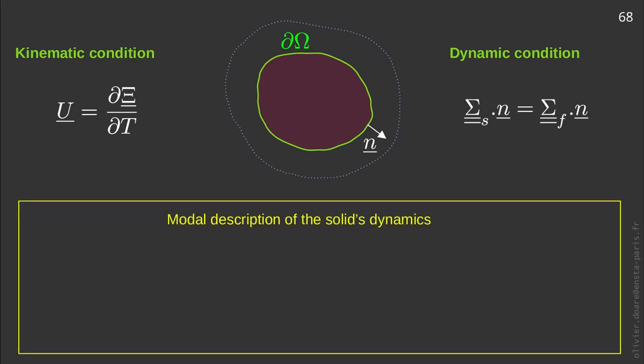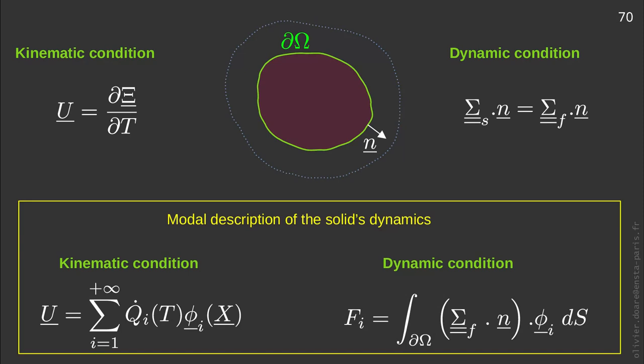Let us now write these equations in the context of a model solid dynamics. To write the velocity of the solid involved in the kinematic condition, we sum over all the model contributions. Note the point on the model displacement, which consists of a derivative with respect to time, which is a velocity. Finally, the dynamic condition written in the model basis consists in calculating the contribution of the fluid stress to the model force of each mode, which amounts to projecting the fluid stress at the interface on the considered mode.